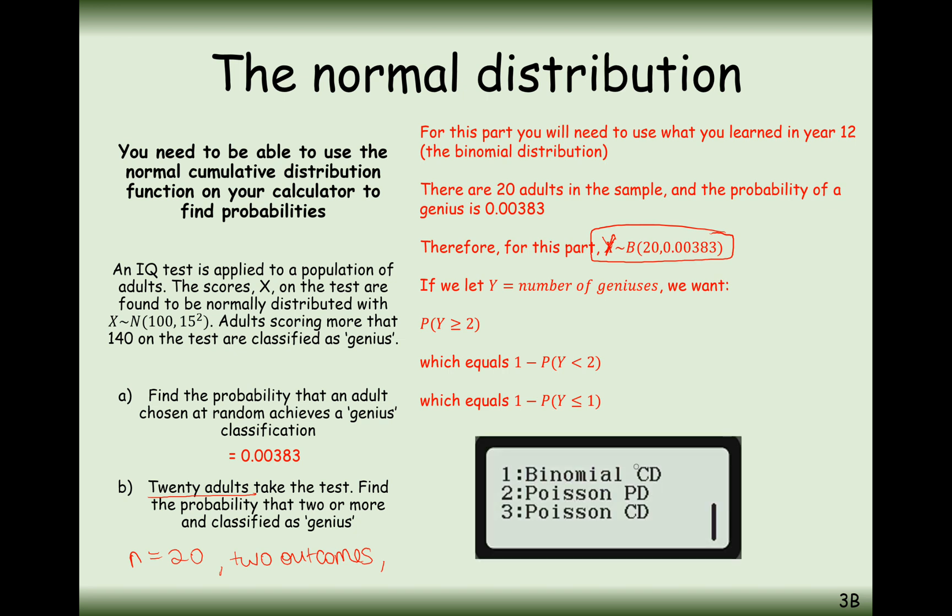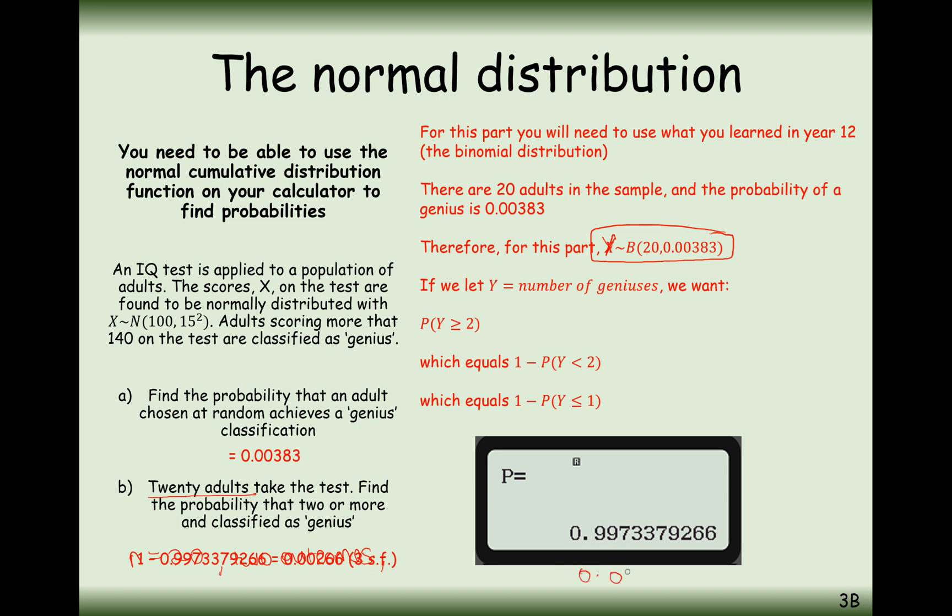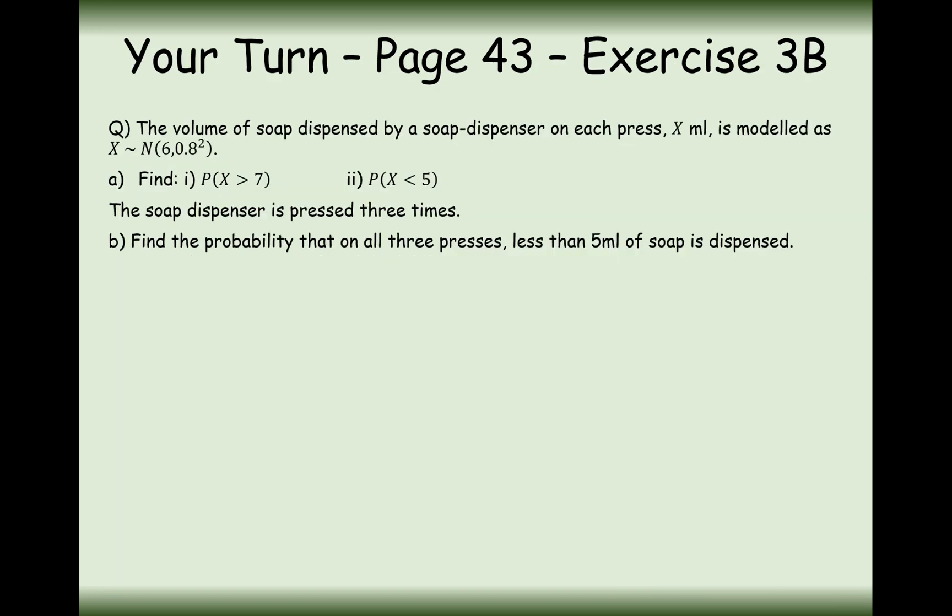You want to select binomial CD mode. Then select one genius or fewer out of 20 with a probability of 0.00383. When you type that in, you get 0.9973379266. But obviously your final answer is going to be 1 minus this, so we get a final answer of 0.00266 to three significant figures. That's the answer to that question then.